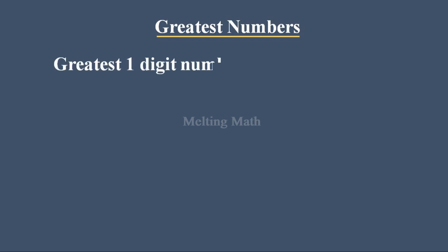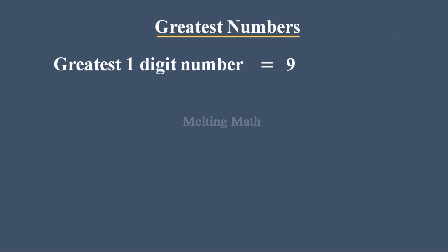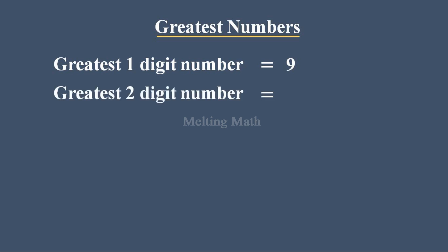First question: which is the greatest one-digit number? The one-digit numbers are 0, 1, 2, 3, 4, 5, 6, 7, 8, 9 — there are 10 one-digit numbers. Among them, definitely 9 is the greatest. So the greatest one-digit number is 9. Similarly, if they asked what is the greatest two-digit number, how can you write it?